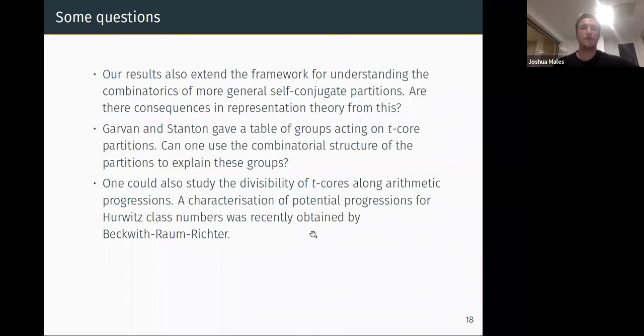The third question is, okay, so we know we have asymptotics of the number of t-core partitions. But we could also study divisibility. So this is a bit more refined knowledge of say the number of certain representations. So we want to look at the divisibility of t-cores along arithmetic progressions. And I've started briefly with that, to look at this question. And a characterization of potential progressions for t equals 4 in terms of Hurwitz class numbers was obtained by Beckwith and Richter very recently. I think there's a preprint earlier this year.